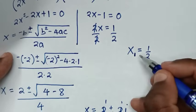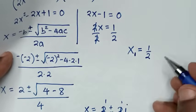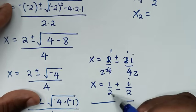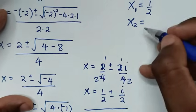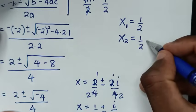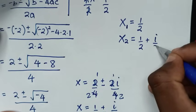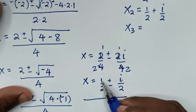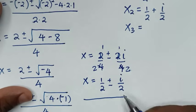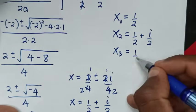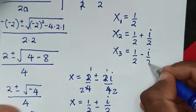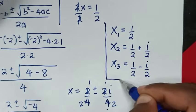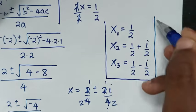So the first value of x is one half, which is the real solution. The second value is x equals one half plus i over 2, and the third value is x equals one half minus i over 2. These are all the values of x in this problem.